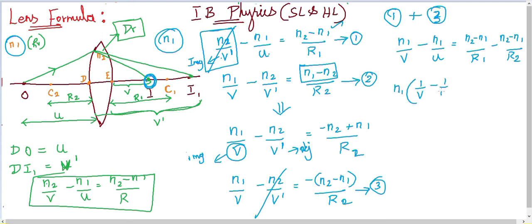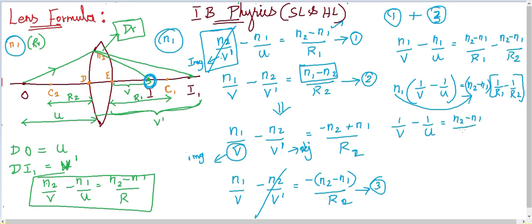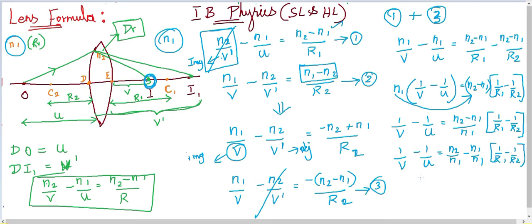Taking n1 as common on the left and (n2 − n1) as common on the right: 1/V − 1/u = (n2 − n1)/n1 × (1/R1 − 1/R2). Since n2/n1 can be written as n21, this simplifies to: 1/V − 1/u = (n21 − 1)(1/R1 − 1/R2). This is Equation 4.